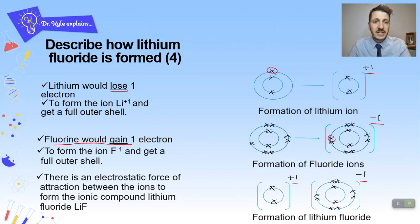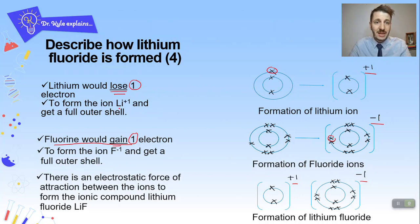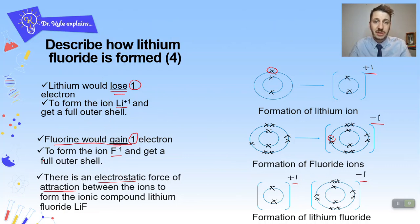In exam questions, always follow this process: talk about losing, talk about gaining, state how many electrons are lost — one for group one, two for group two — state how many electrons are gained, state what ion is actually forming, and finally say there is an electrostatic force of attraction between the two ions. If you do all of that, you will get full marks in your GCSE. It's probably a little extra information, but following this process will get you really good marks.